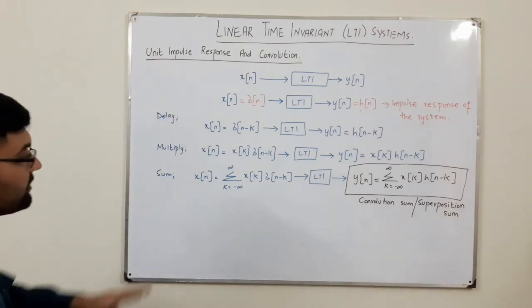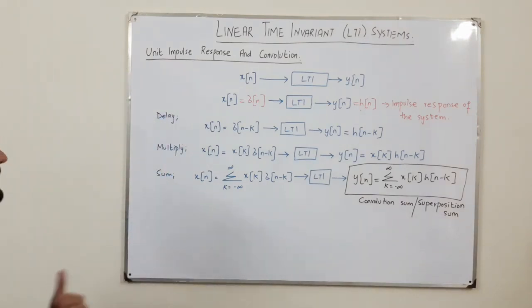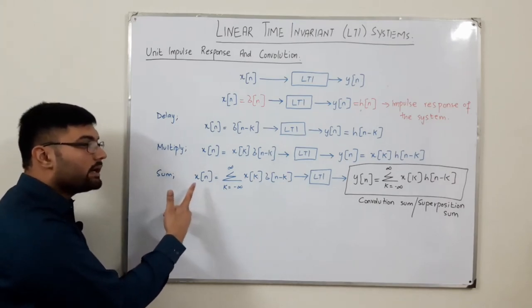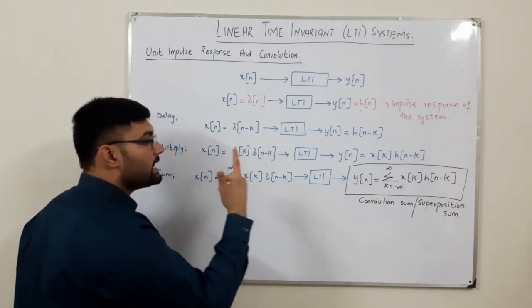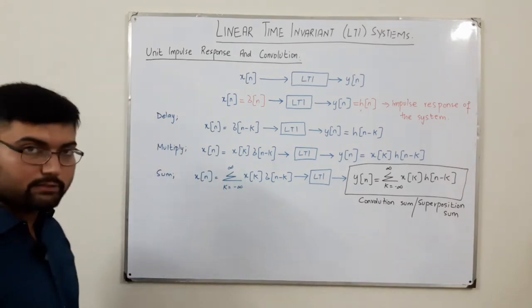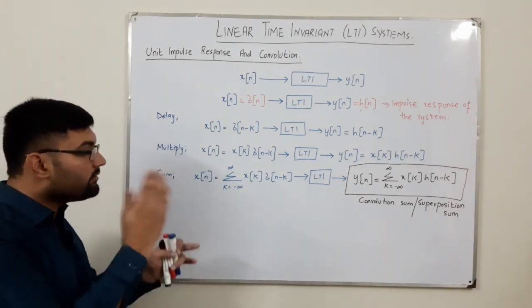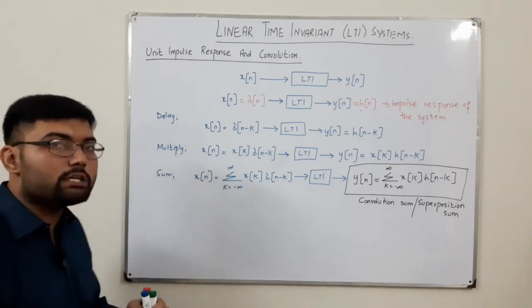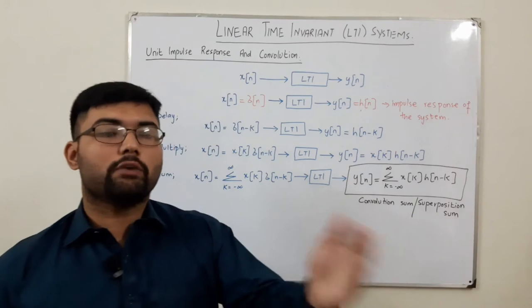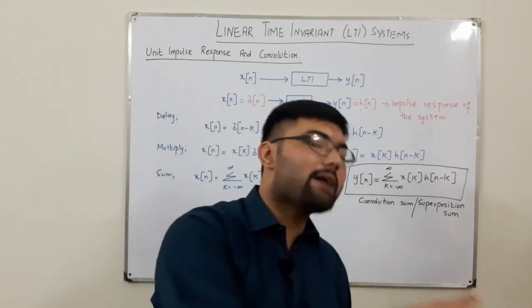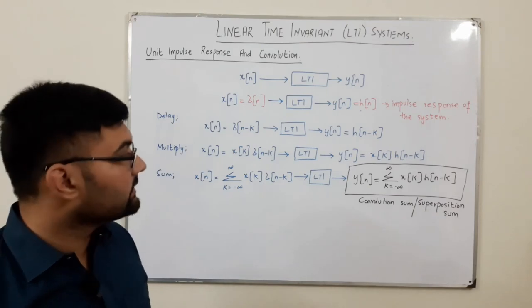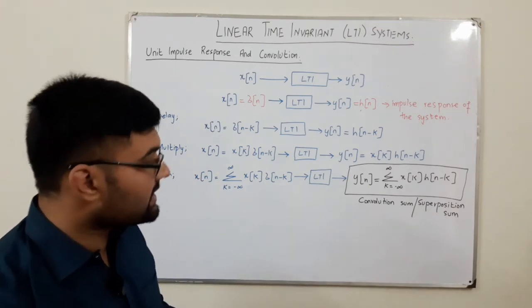We have now represented any given signal X of n in terms of the basic impulse signal using the sampling property. We then use superposition to calculate the output, which is the superposition of the responses to each and every input. This is your convolution sum.